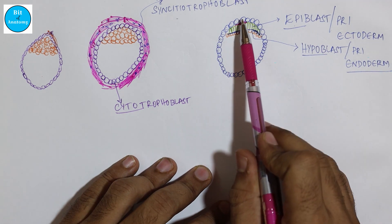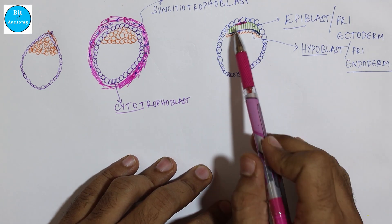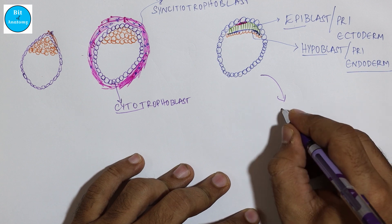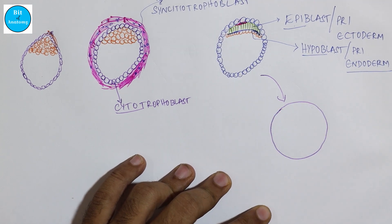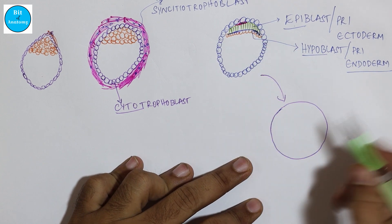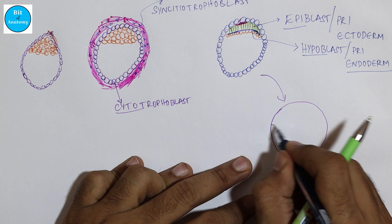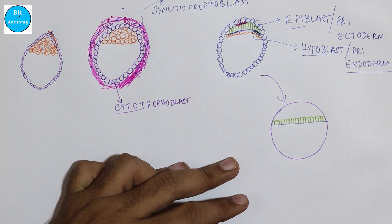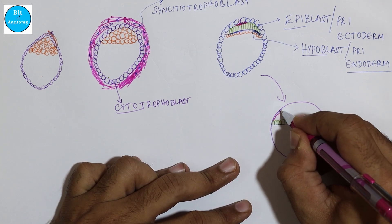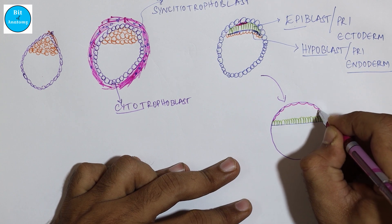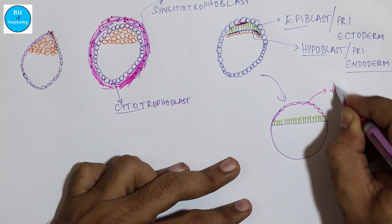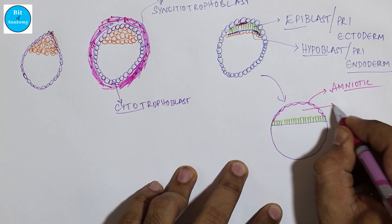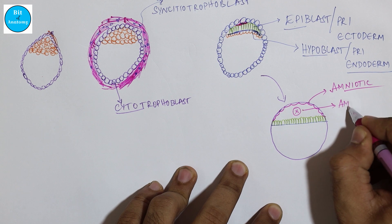Gradually there will be appearance of a small space between the epiblast layer and the trophoblast layer, and that small space will gradually increase in size. This space is lined by a layer of flat cells derived from the cytotrophoblast layer, and this layer is called the amnion membrane or amniotic membrane. The space that is formed here is called the amniotic cavity.